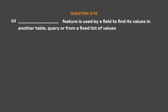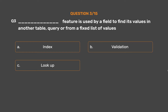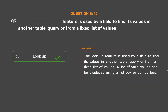Question No. 3. The blank feature is used by a field to find its values in another table, query, or from a fixed list of values. Option A: Index. Option B: Validation. Option C: Lookup. Option D: Default Value. The correct answer is Option C — Lookup. The lookup feature is used by a field to find its values in another table, query, or from a fixed list of values. A list of valid values can be displayed using a list box or combo box.